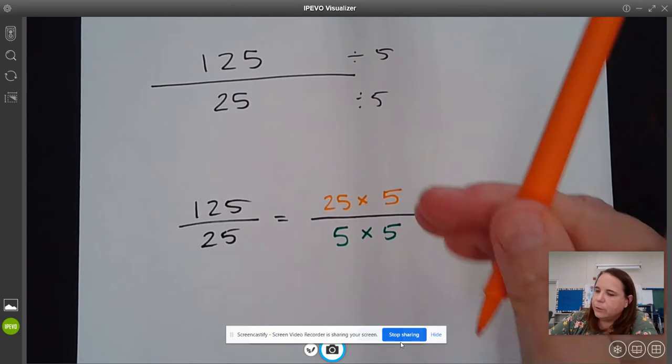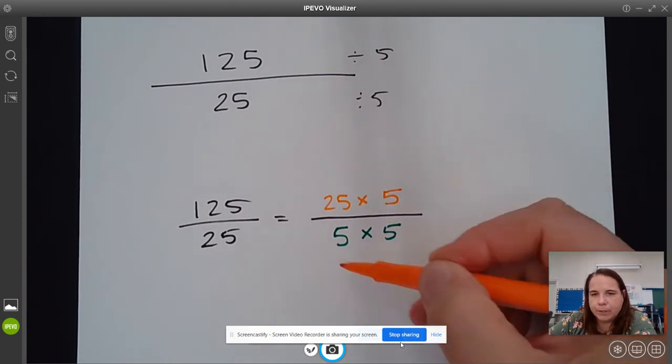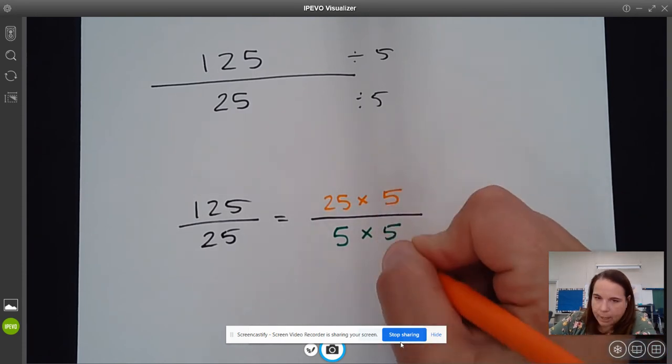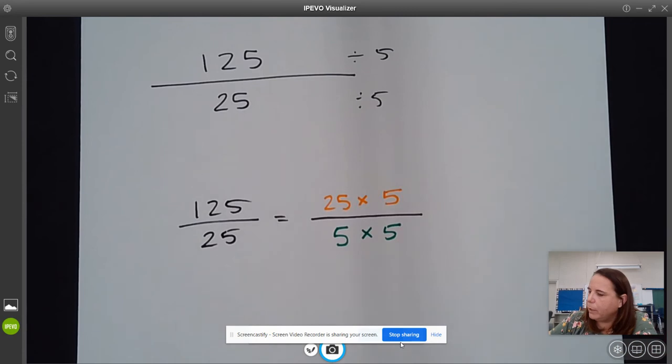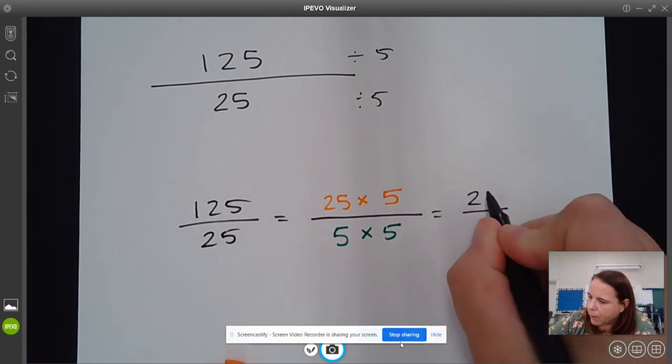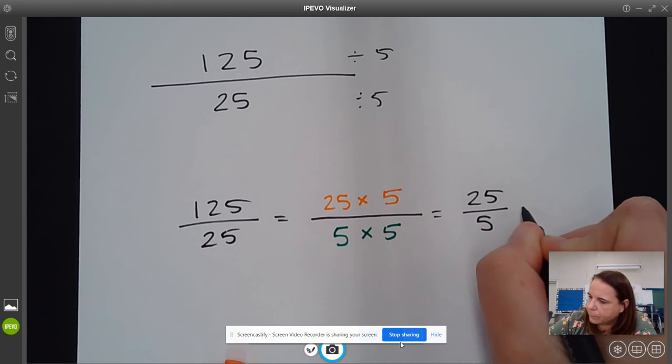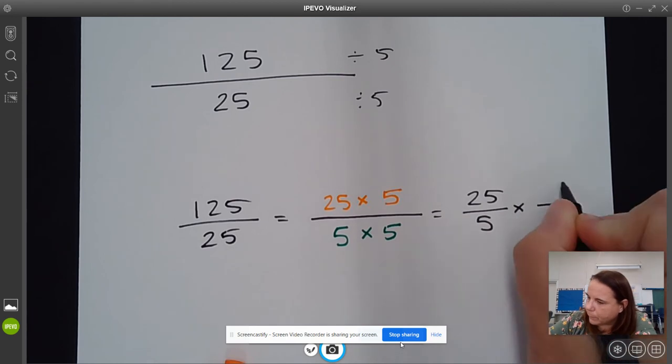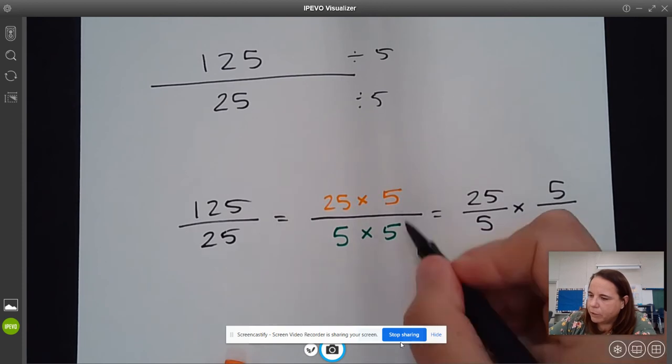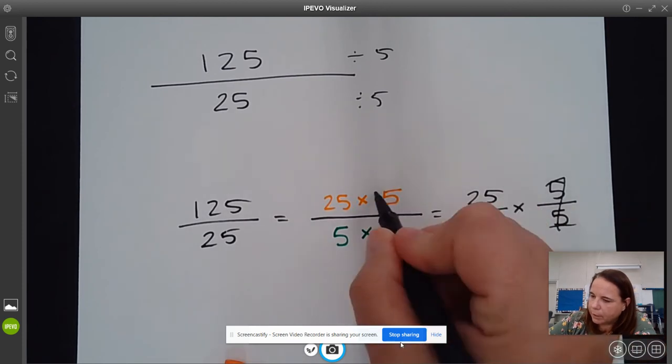And so then what we can do is we can separate these two pieces. We can say that these are going to cancel out because they're both fives, but we could rewrite this as 25 over 5 times 5 over 5. And 5 over 5 just becomes one, right? They cancel out.